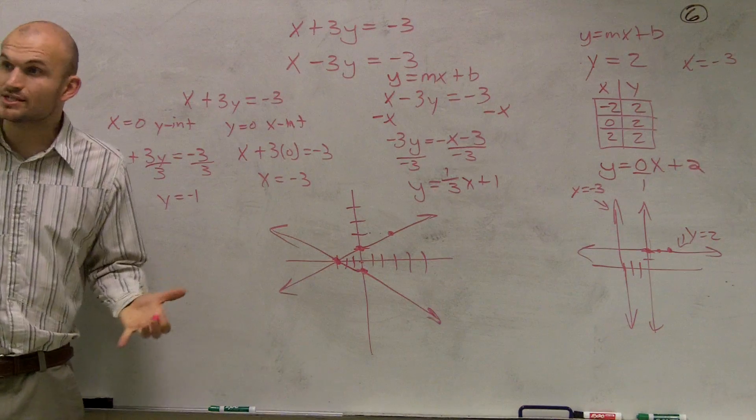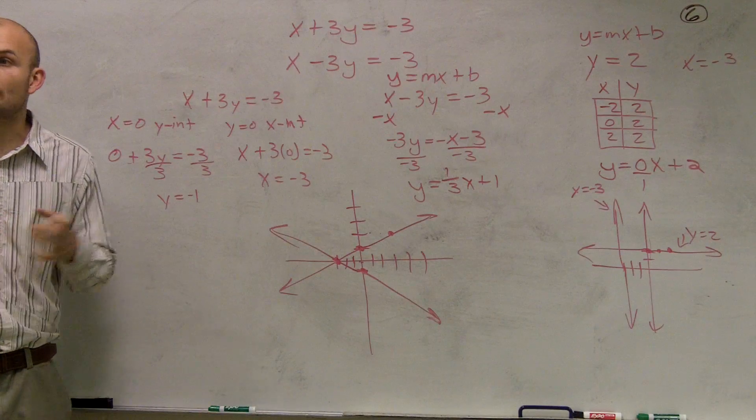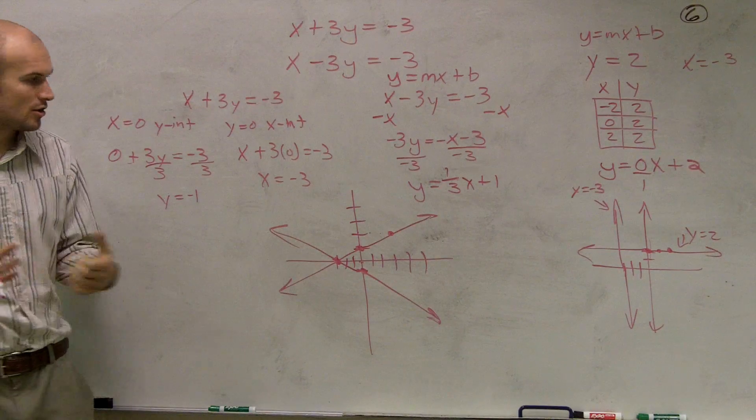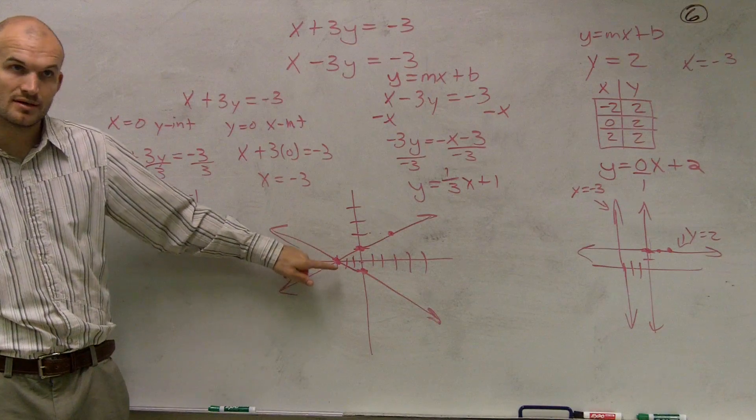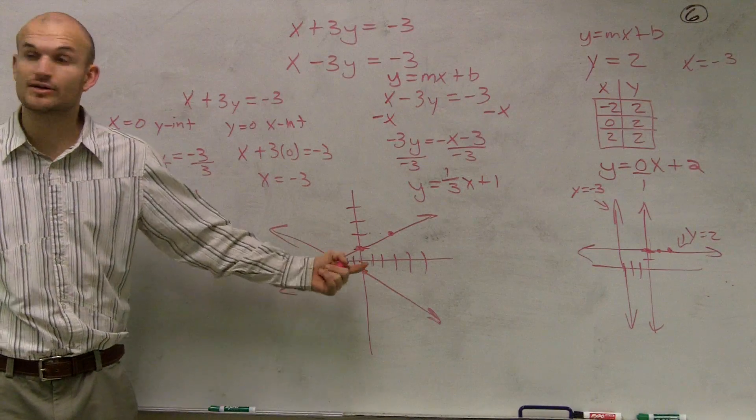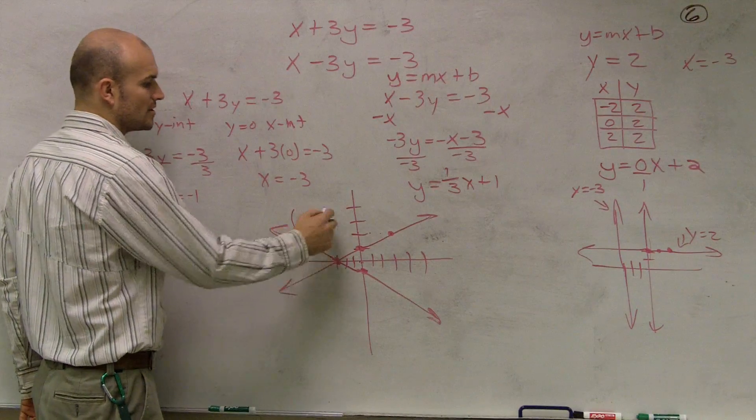So remember, guys, we're trying to solve the system, right? So we need to find what is the value for X and Y when our systems are equal to each other, or when our two equations are equal to each other. Well, you guys can see they're equal to each other at this coordinate point. And this coordinate point has an X and a Y value, right? So the X value for this is negative three, and the Y value is at zero.